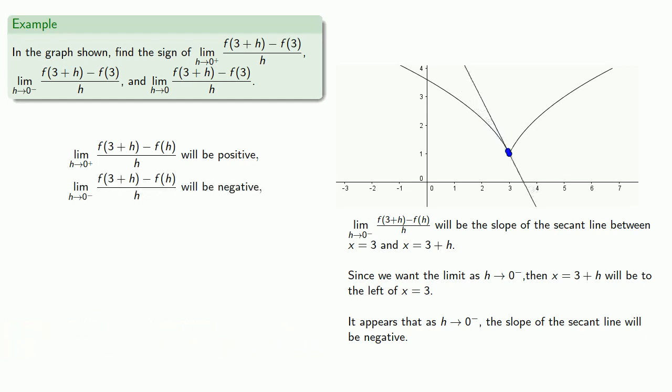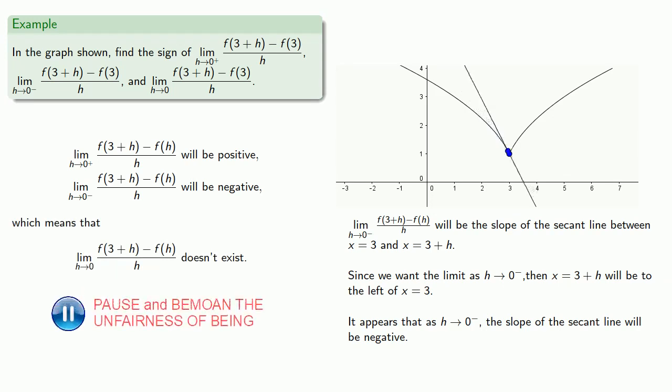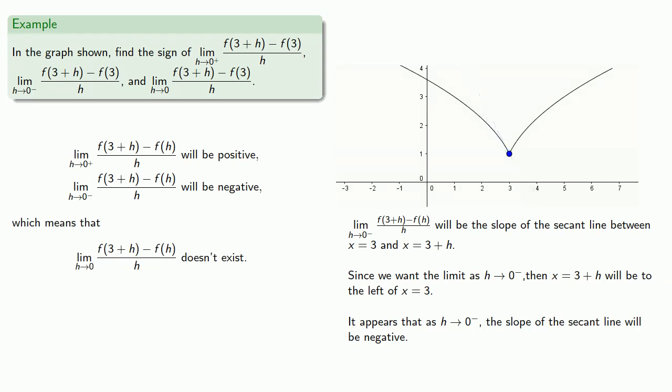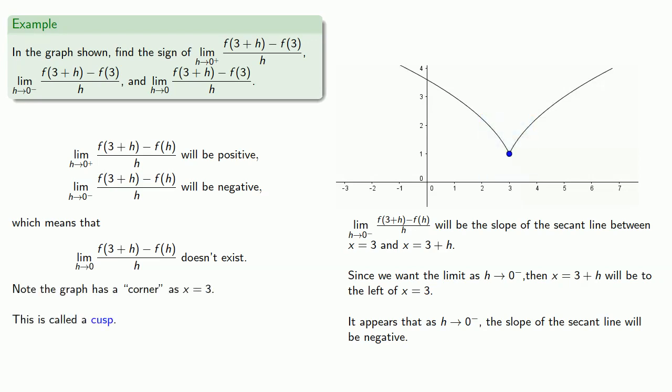Because the two limits disagree — a positive number can't be equal to a negative number — this means that the limit itself doesn't exist. Remember, the derivative is an algebraic statement, but it also has to do with the geometry of the graph. Note that the graph has a corner at x equals 3. This is called a cusp.